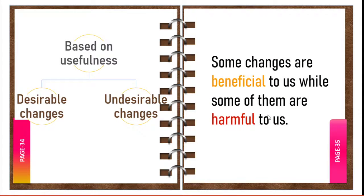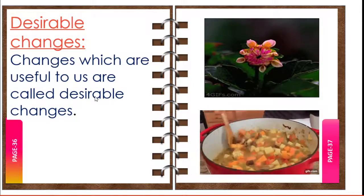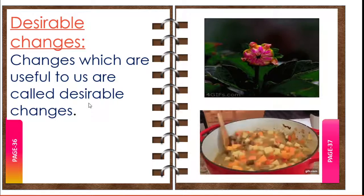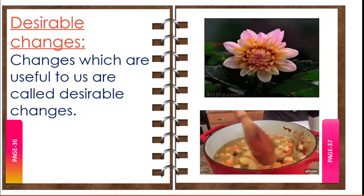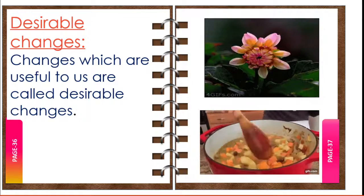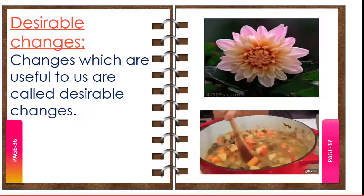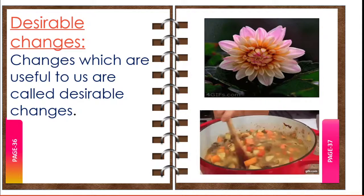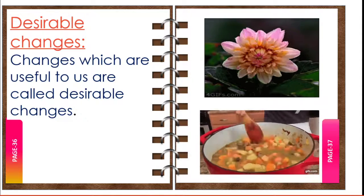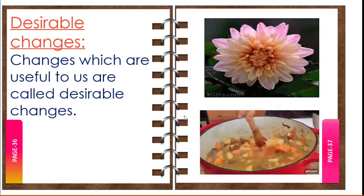We are going to study changes based on usefulness. Some changes are beneficial to us while some are harmful. Based on their usefulness, we can classify changes into desirable changes and undesirable changes. Changes which are useful to us are called desirable changes. Examples of desirable changes: curdling of milk, blooming of a flower, cooking of food, construction of buildings, and baking of a cake — these are all beneficial to us and hence called desirable changes.